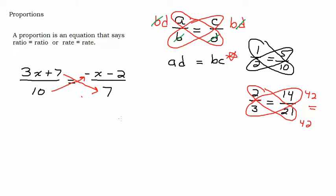So what we need to be careful with here is that we're multiplying this entire numerator by seven. So we need to use parentheses. So I'll write it without parentheses first.